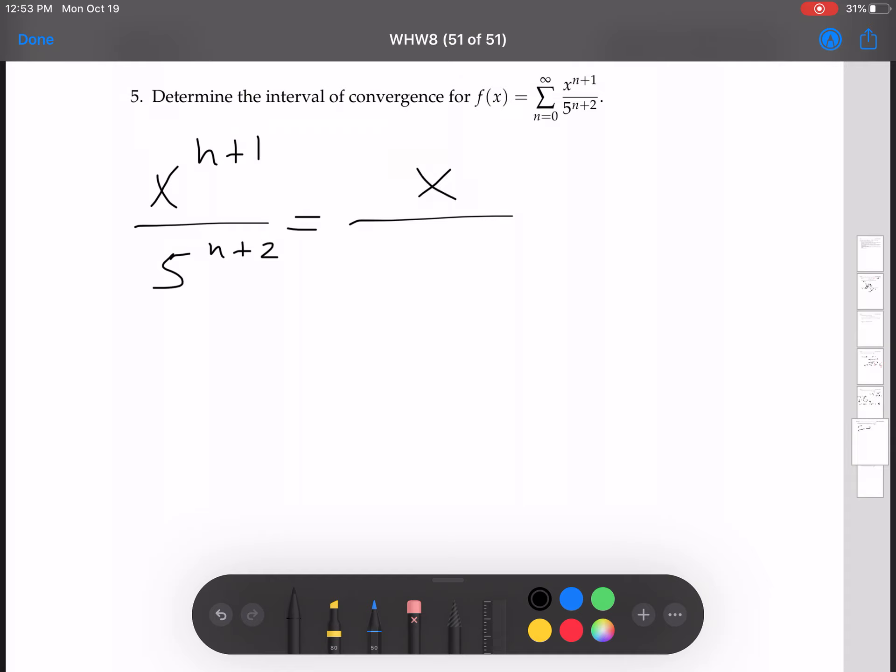So you can play around with the exponents a little bit. Write this as 5 to the 1 times... well, I guess technically we could put a little extra step in here: 5 to the 1 plus n plus 1 over 5 times 5 to the n plus 1.